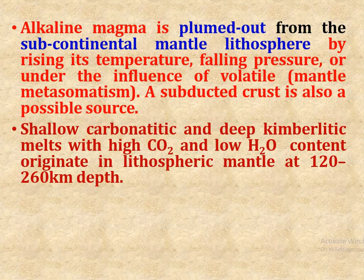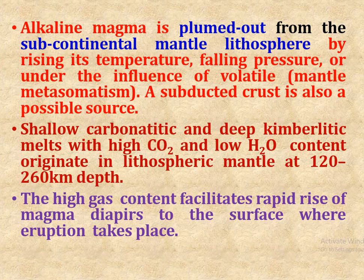Shallow carbonatitic and deep kimberlite melts, with high carbon dioxide and low H₂O content, originated in the lithospheric mantle at 120 to 260 km depth. The high gas content facilitates the rapid rise of magma to the surface where eruption takes place.